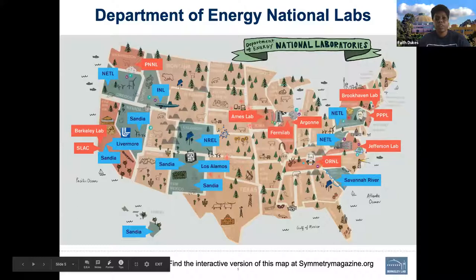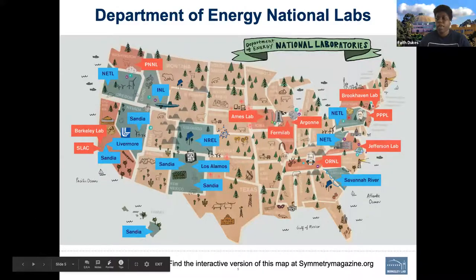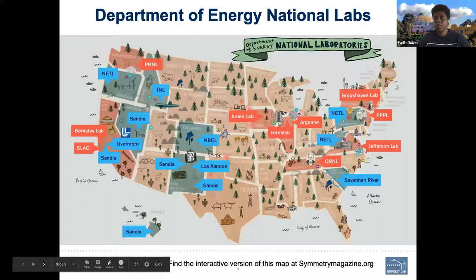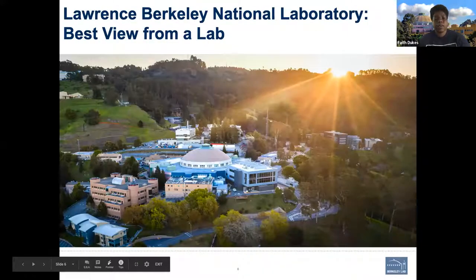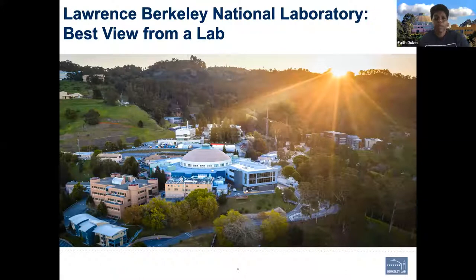If you're new to this program, we are Lawrence Berkeley National Laboratory, one of 17 Department of Energy national laboratories. We're located on the west coast in California, and if you go to symmetrymagazine.org you can find out a lot more about the other national laboratories throughout the country. We like to say we have the best view from a lab — this is Berkeley National Laboratory, an overhead shot, and in the middle of the screen is the topic of our session today: the Advanced Light Source.